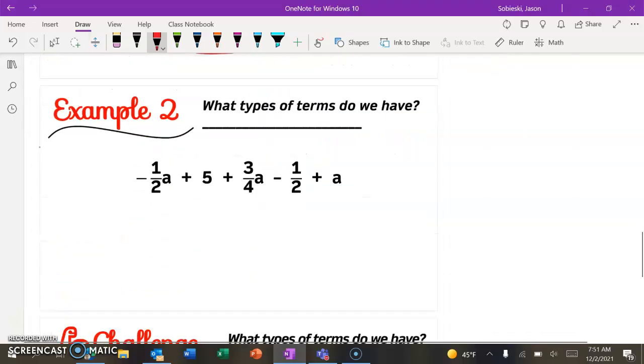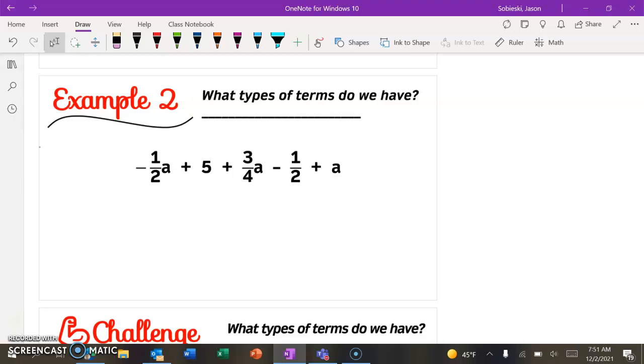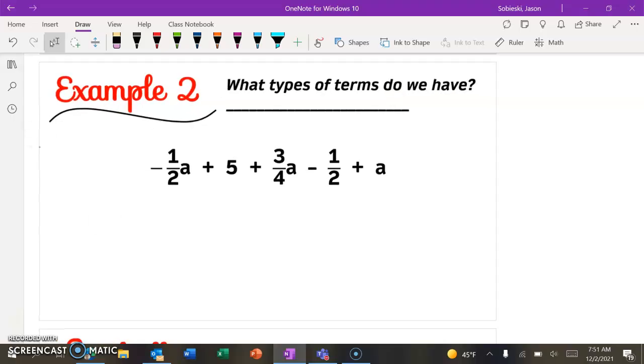All right, so scroll down to example 2. This one does involve fractions, but let's talk about the types of terms we have. Well, we have some terms that have a's in them. And we have some that are just constants. So see if you can use your highlighter tool. Pause the video. See if you can go and decide if you can highlight all of the two types of terms. So you're going to need two highlighter colors. And then see if you can put them together.